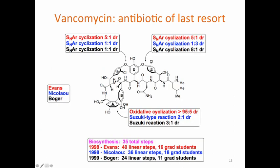So when nature synthesizes this molecule, this is first isolated from a soil bacterium, the biosynthesis or natural synthesis takes 35 total reactional steps. Now different synthetic groups, and these are three very famous synthetic organic chemists, the Evans group took 40 synthetic steps, linear meaning that all the steps were done in a row, and 16 graduate students. So years and years of work to make this molecule. Casey Nicolaou's group did a synthesis of this molecule as well, using only 36 linear steps and 18 graduate students. Dale Boger's group used 24, so the shortest synthesis to that point, and 11 graduate students on that particular synthesis. So an enormous amount of work to go into these syntheses.